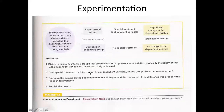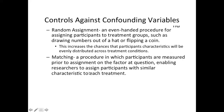How do we get rid of confounds? There are two ways: random assignment and matching. With random assignment, we use an unbiased way to assign a person to the control group versus the experimental group. If you have a large enough sample, we assume the groups are roughly equivalent — similar age profile, similar gender profile — on everything but the independent variable.